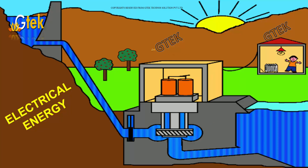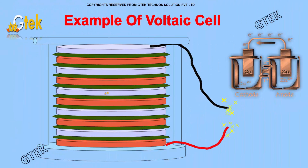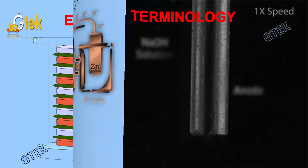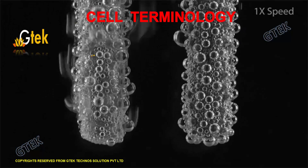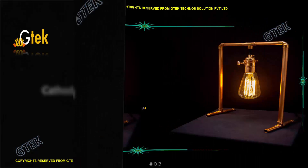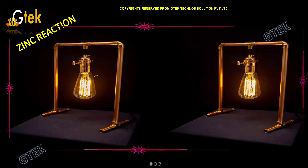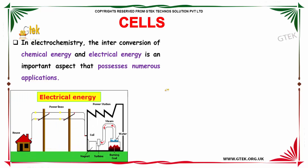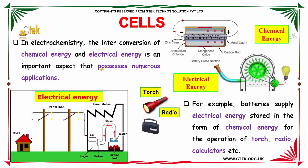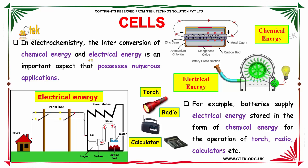This is about electrical energy, where you can see the depiction of electrical energy in terms of a real-time perspective. We are going to discuss about the voltaic cell and cell terminology. In terms of electrochemistry, the interconversion of chemical energy and electrical energy is an important aspect that possesses numerous applications.